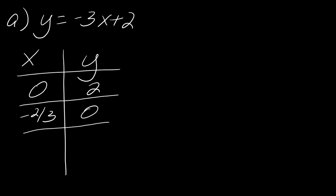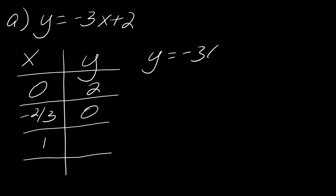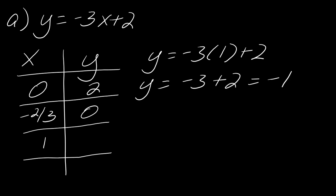Looking at this, I don't think choosing y = 0 is as easy here. If I choose something for x, it will just spit out my y. Choosing small numbers is key — you don't want something like 22 since you have to graph this. If I plug in x = 1, I get −3(1) + 2 = −3 + 2 = −1. So I have the point (1, −1).